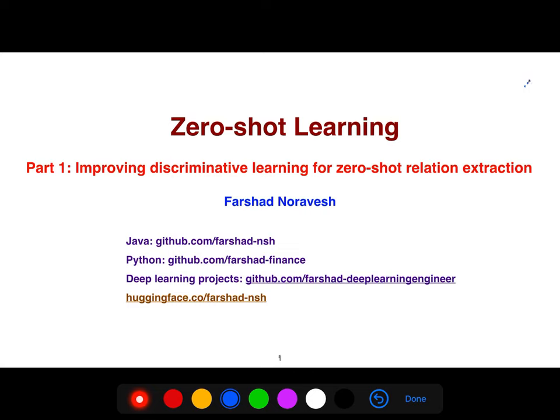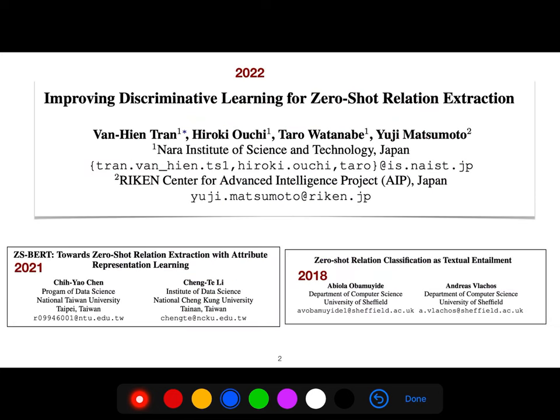In this video, I'm going to be explaining this important paper, which is called Improving Discriminative Learning for Zero-Shot Relation Extraction, and this paper in 2022.